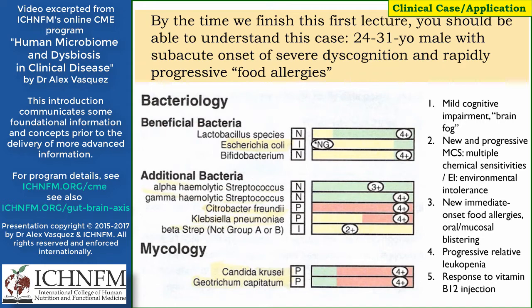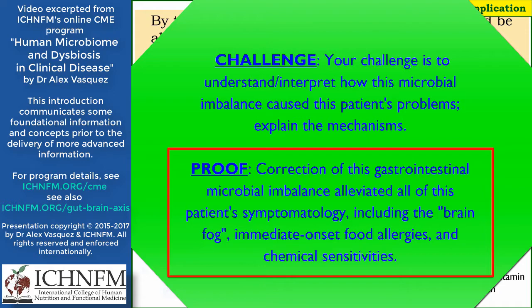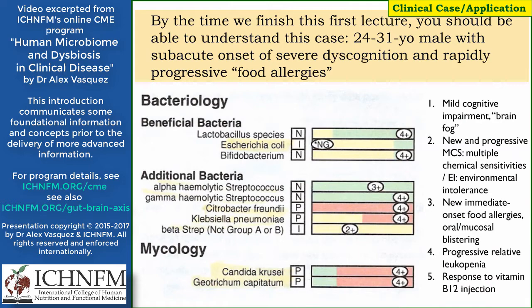Our contextualizing case for this first section is a 24-year-old patient who presents with mild cognitive impairment or brain fog, new and progressive multiple chemical sensitivities or environmental intolerance, new immediate-onset food allergies manifested by oral and mucosal blistering, a progressive relative leukopenia, and a positive clinical response to a vitamin B12 injection. Based on this clinical presentation, we did a comprehensive stool analysis — you can see the microbial culture results here — and I'd like you to be able to interpret these results with the patient's clinical presentation by the end of this presentation.